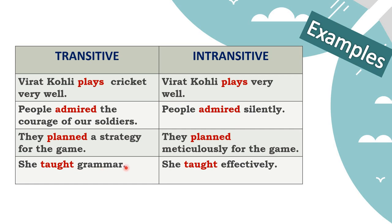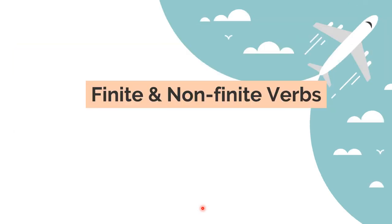'She taught grammar' - taught what? Grammar - object present. 'She taught effectively' - no object. When you ask the question 'what?' after a verb and get an object as an answer - whether it is a noun, pronoun, or phrase - then it is a transitive verb. The same verbs can become transitive or intransitive; you have to see whether there is a noun, pronoun, or phrase following it that answers the question 'what?'